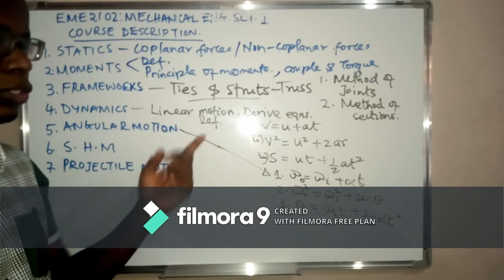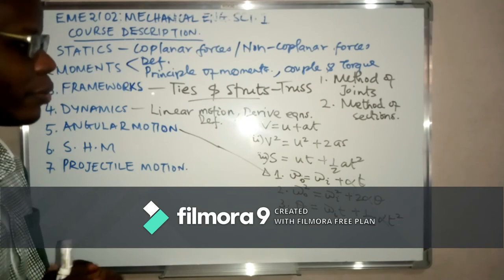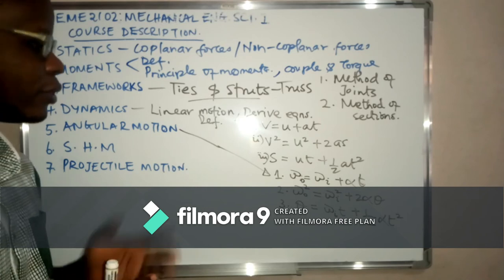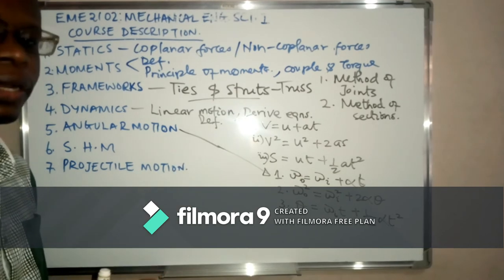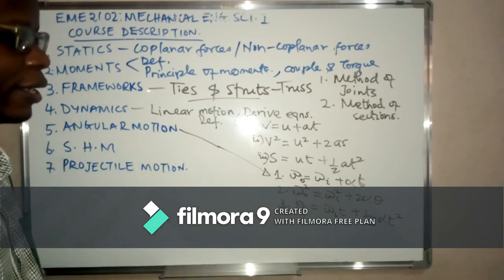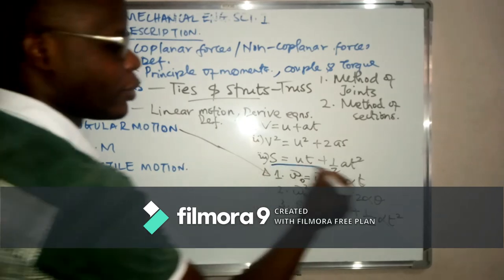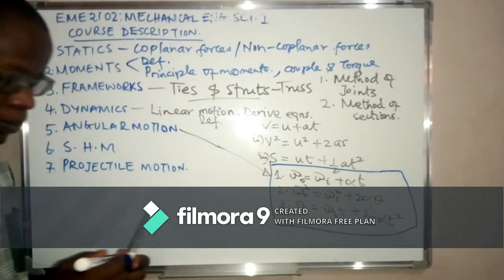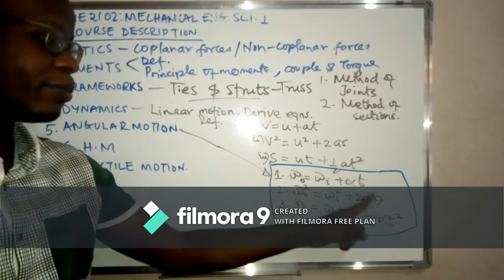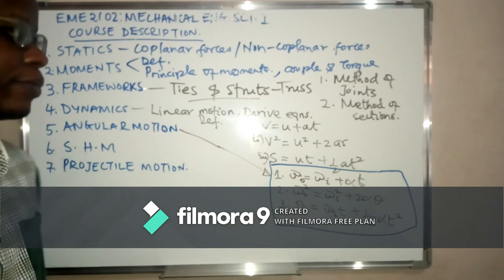We are also going to look at angular motion. Angular motion is different from linear motion in that we study the motion of bodies in circular paths. Just like in linear motion, we will do some definitions — looking at initial angular velocity, final angular velocity, and their symbols. We have three key equations for angular motion, where alpha represents angular acceleration, theta represents angular displacement, and t remains for time.